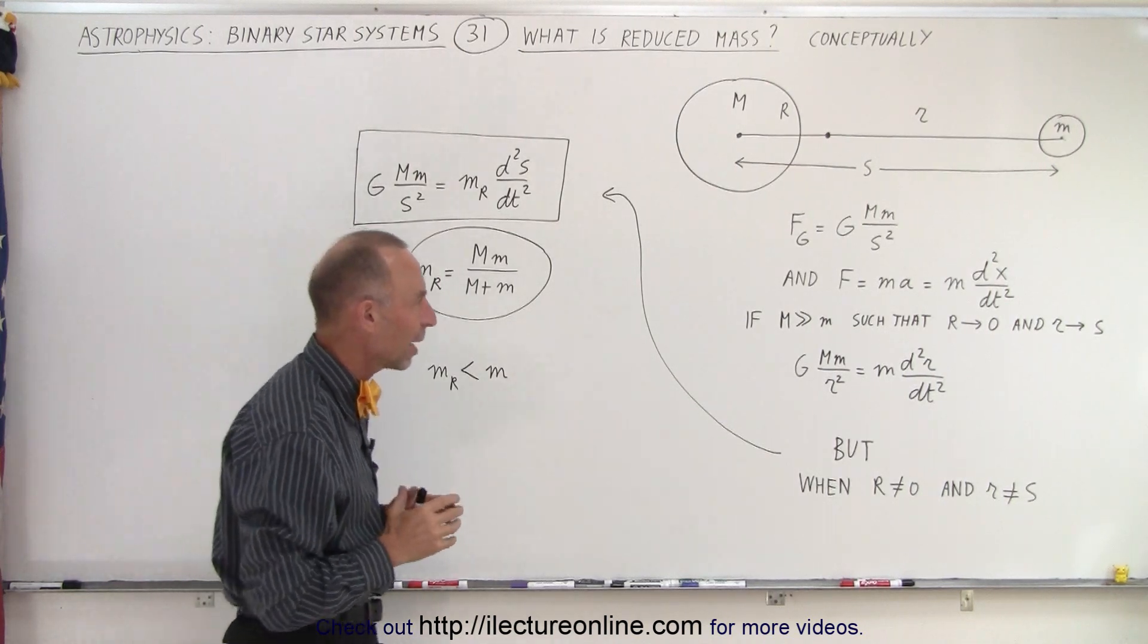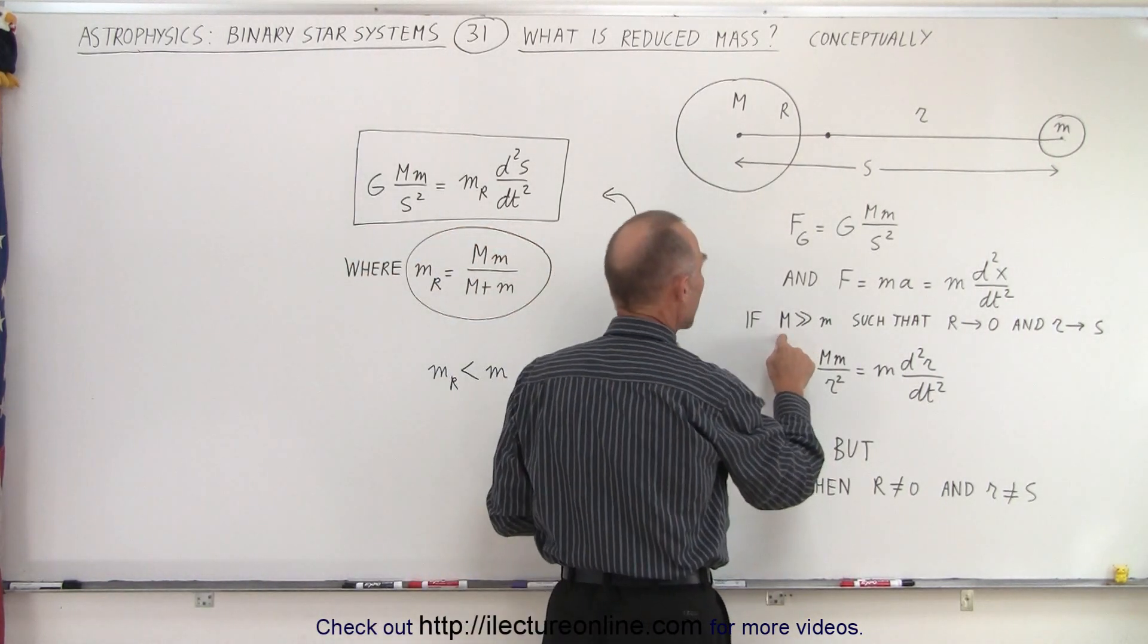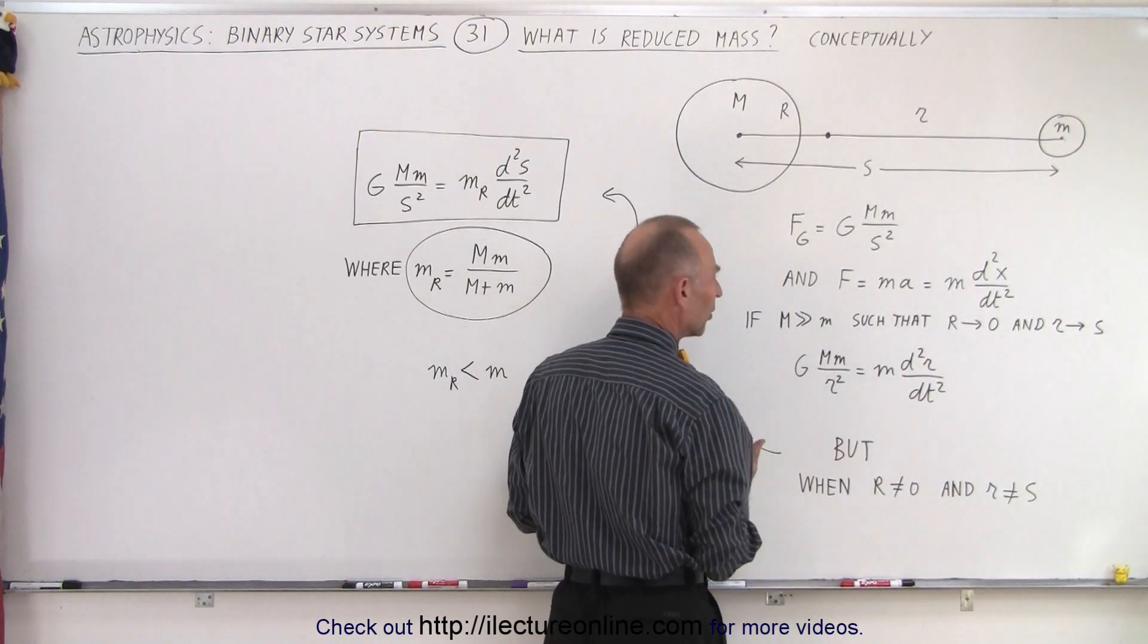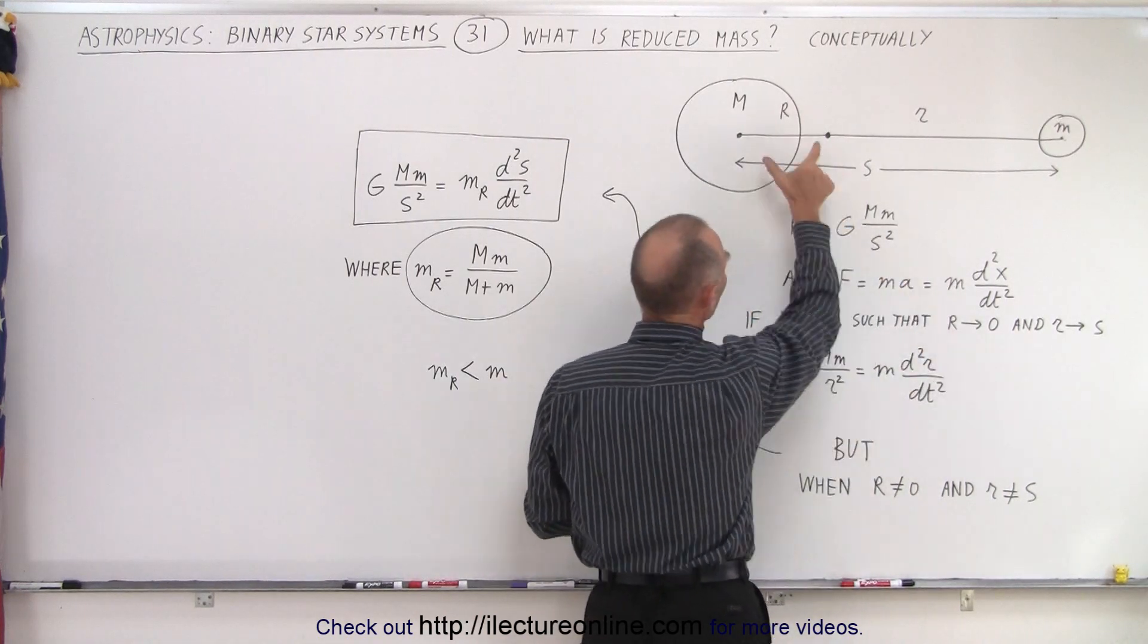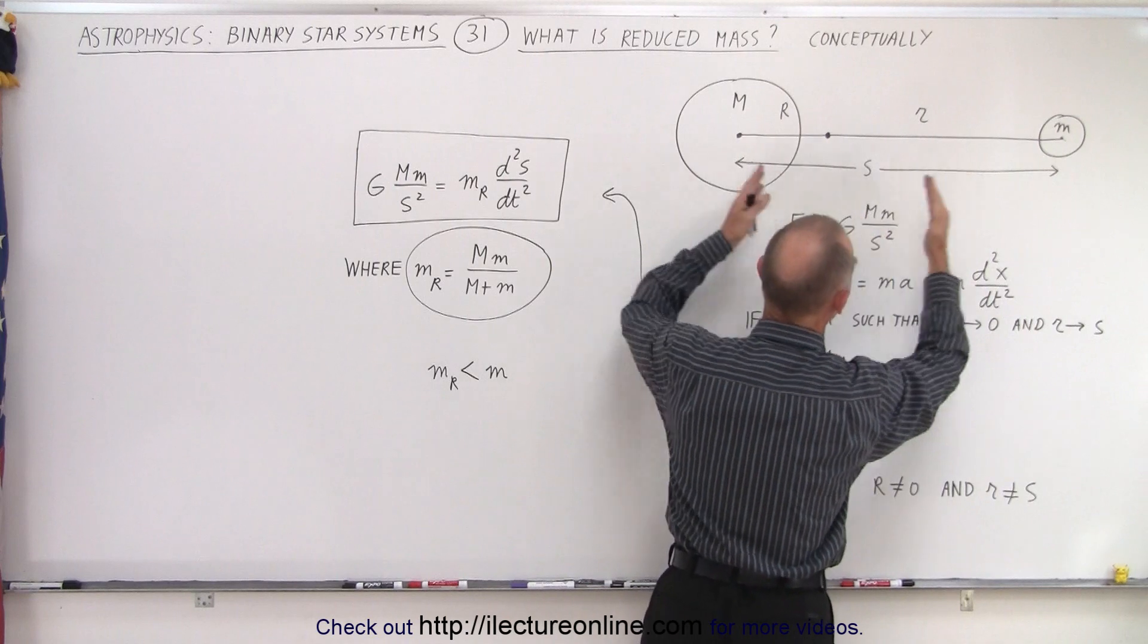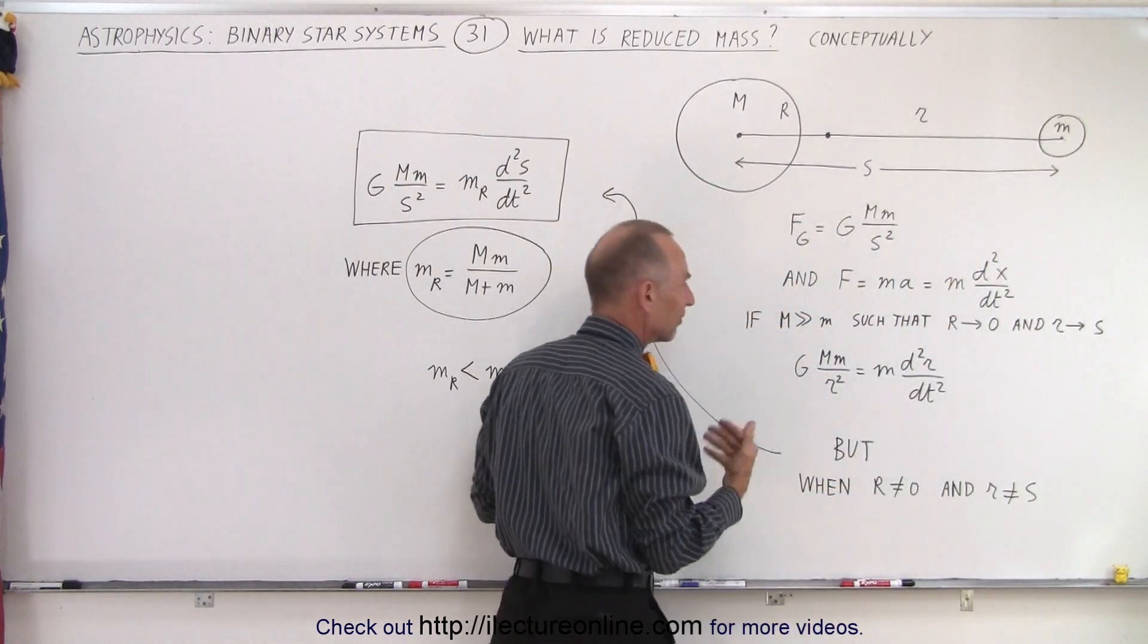If we use the example where large mass is much, much greater than small mass, a thousand times as large, then we can say that R will essentially become zero and small r essentially will become equal to s.